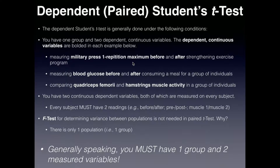Here are examples where you might use a paired t-test. Suppose you're running a resistance exercise training program and you want to measure the maximum they can lift on the military press — the military press one repetition maximum — before the program and after. So you're measuring two things on each person: the amount they can lift before the program and then the amount they can lift after. You would expect it to increase, but two different things on one person.